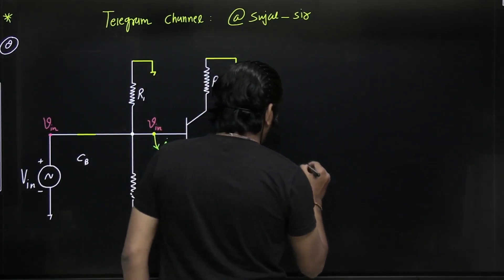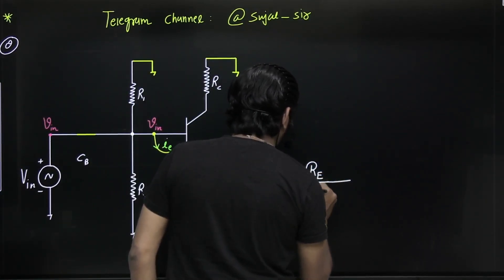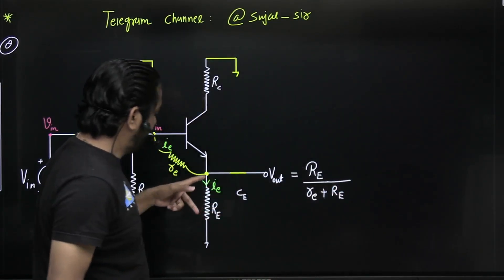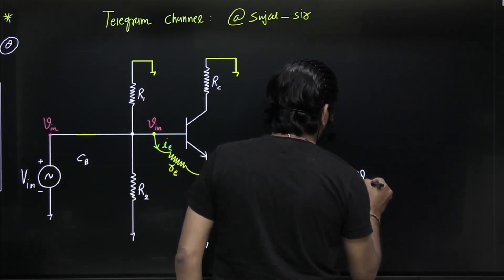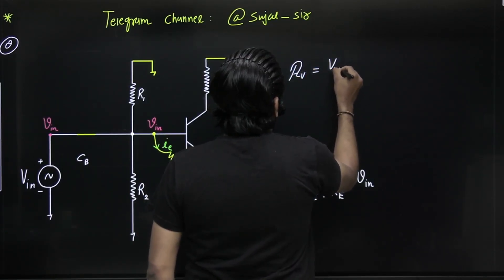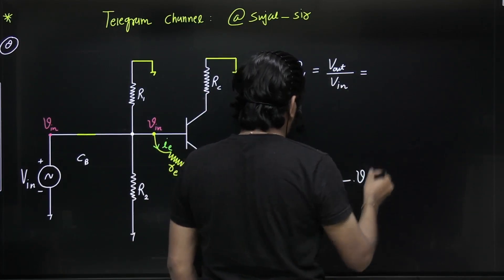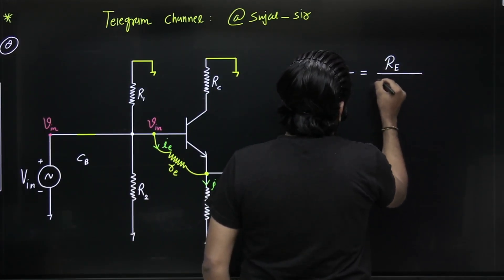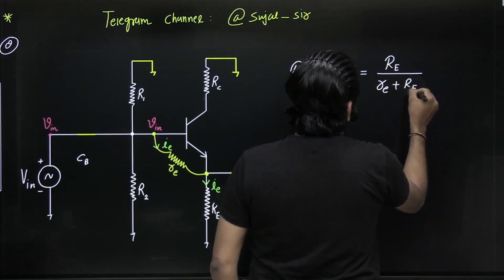Simply, we can use the voltage divider rule because both resistors are connected in series and the total voltage is VIN. We want to find the voltage across capital RE, so V_out = (capital RE / (small re + capital RE)) × VIN. Therefore, voltage gain = V_out / VIN = capital RE / (small re + capital RE).